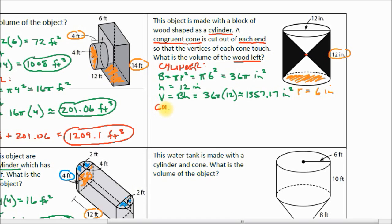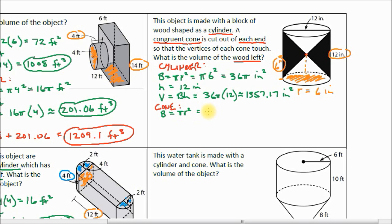Now let's find the volume of one of our cones. We can use the same base. If these two cones meet exactly at this point, then the distance from the base up to the halfway point is 6 inches — so the height of this cone is equal to 6 inches. We already know our base area: it's pi r squared with the same base as the cylinder, which is pi times 6 squared, equaling 36π inches squared.